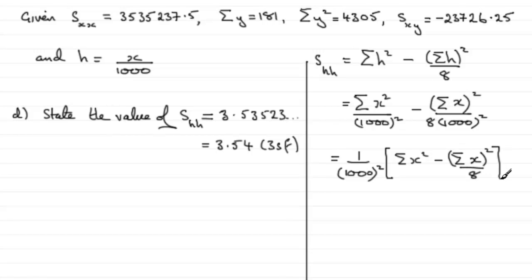You should recognize this now as being 1 over 1000 all squared multiplied by s_XX. And that's how we get the reason why we divide s_XX then by 1000 all squared.